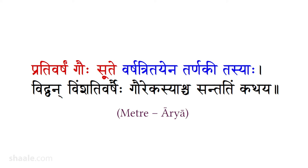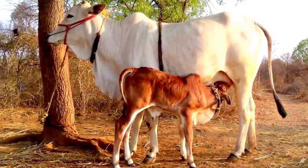The verse: 'Prativarisham Gauhu Sute Varishatritaena Tarnakita Syaha Vidvan Vimshati Varishaihi Gau Rekasyaascha Santatim Kathaya.' It is a very practical example. Prativarisham means every year — this has to do with what people have observed. Like human beings, every year a cow can give birth to a calf in principle. Prativarisham Gauhu Sute. The moment the calf becomes three years old, it matures enough to give birth by itself. He asks: imagine this happens continuously for twenty years — tell me what will be the population of cows at the end of twenty years, assuming none of them died.